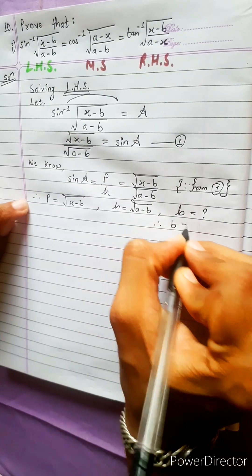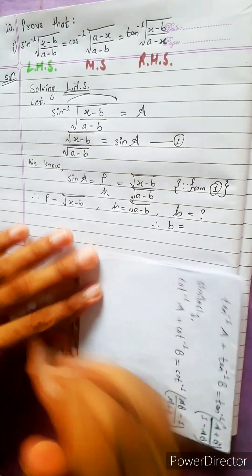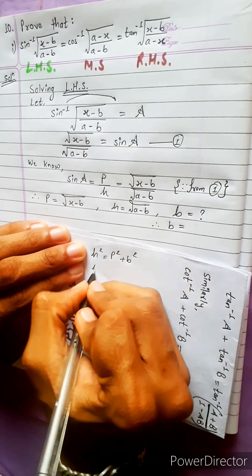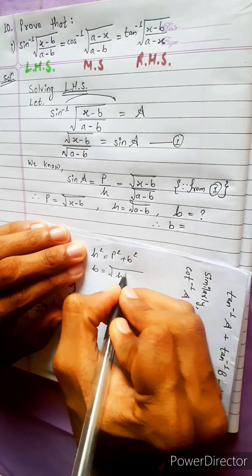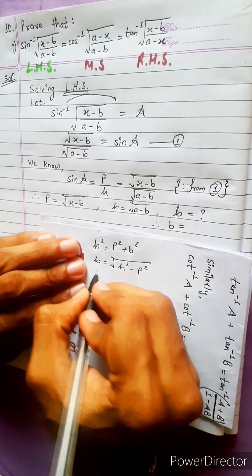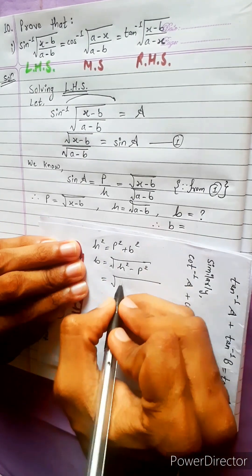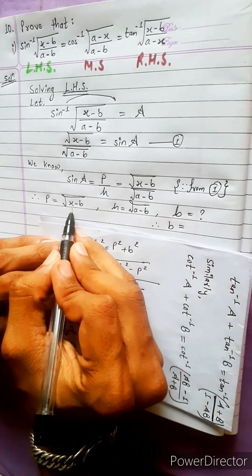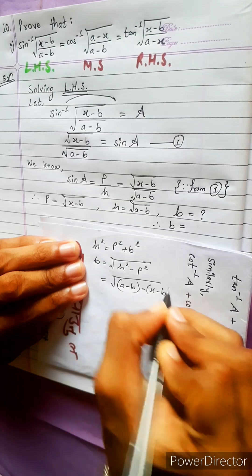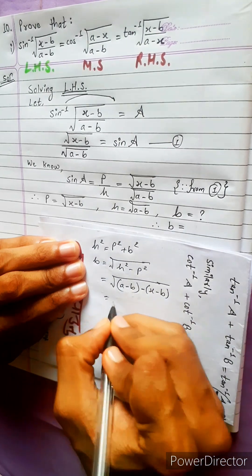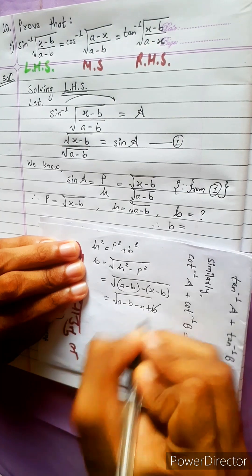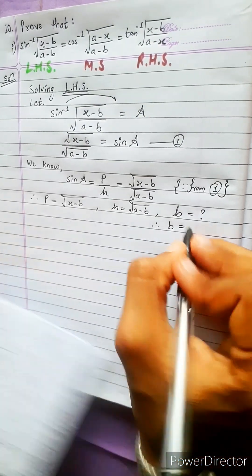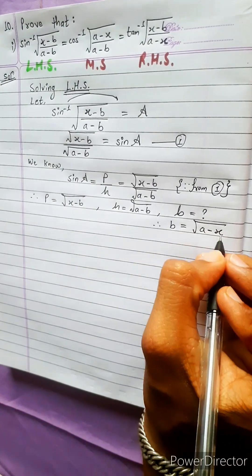Now we find the base. Using the Pythagorean theorem: h squared equals p squared plus b squared, so base equals under root (h squared minus p squared). Substituting: base equals under root (a minus b) minus (x minus b), which simplifies to under root (a minus x). Therefore, base equals square root (a minus x).